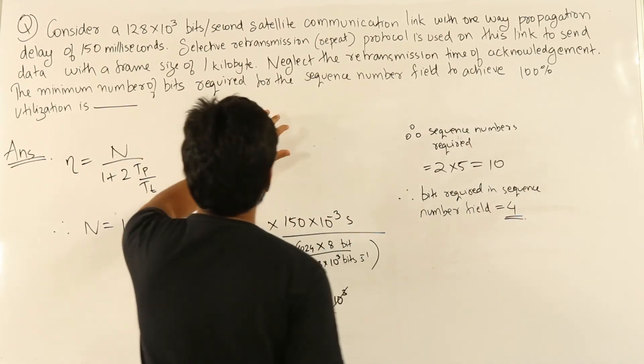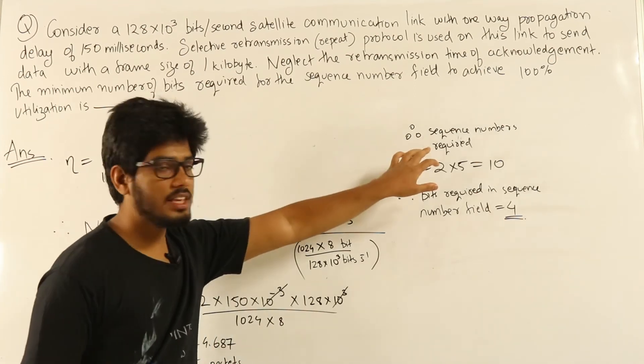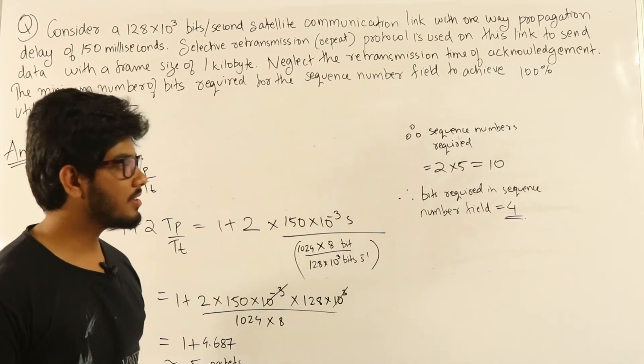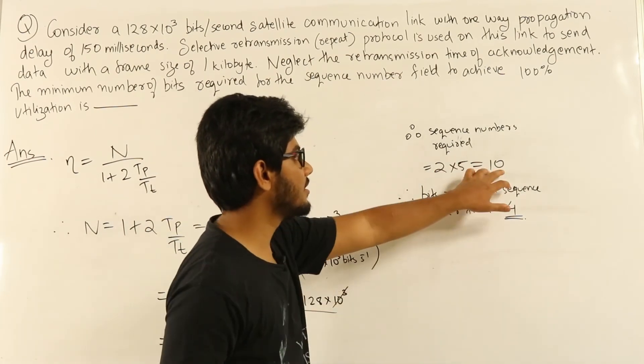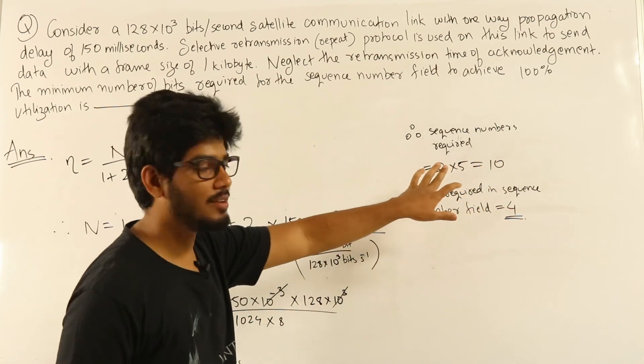In SR protocol, the number of sequence numbers required is 2 times the number of packets sent in one round. That is 2 × 5 = 10. So we need 10 different sequence numbers.